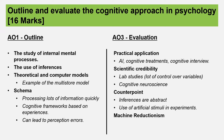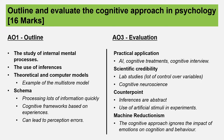Finally, we're going to talk about machine reductionism and how the cognitive approach ignores the impact of emotions on behavior. As part of that point, we'll probably refer to something like anxiety and eyewitness testimony and Johnson and Scott. If you want to have a go at writing the essay, go ahead and pause the video now. If not, we'll move on and have a look at the full thing.